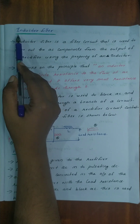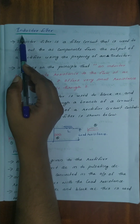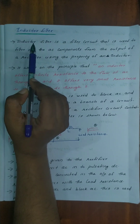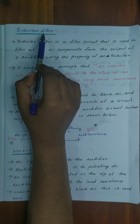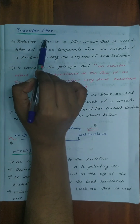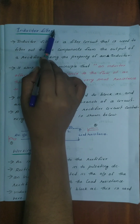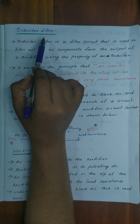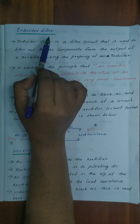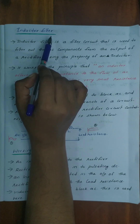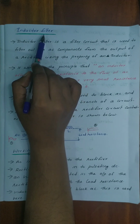Good morning to all. In this case, we are going to discuss the inductor filter. A filter circuit is used to remove the AC components from the output DC of a rectifier. It will filter them out.